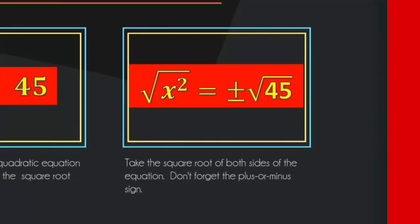Again, we take the square root of both sides, and remember to put a plus or minus sign in front of the square root of the constant term.